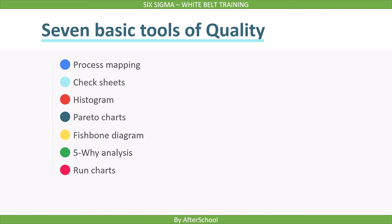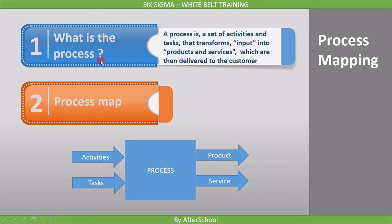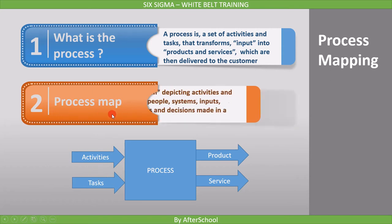Let's first cover the process mapping tool. To understand process mapping, we must first understand what a process is. A process is a set of activities and tasks that transforms input into products and services, which are then delivered to the customer. The process has activities and tasks within it, and to represent these we use the process map.